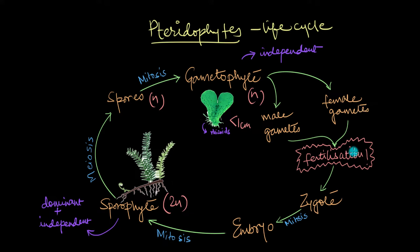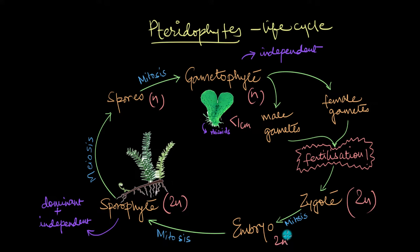These gametes fuse and undergo fertilization, giving us a diploid zygote. This zygote develops into an embryo, which is also diploid, and this embryo further differentiates into roots, stems, and leaves — and we end up with the diploid sporophyte.